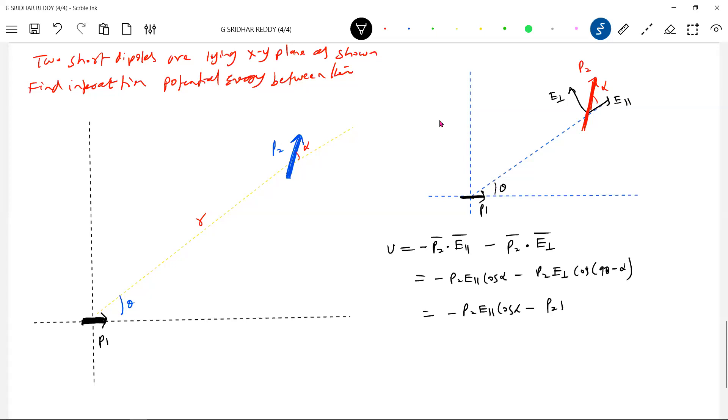What is cos(90° - α)? Sine alpha. Good. Now I think we are in a better position.